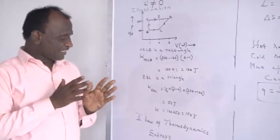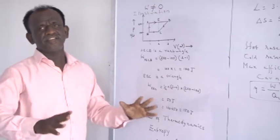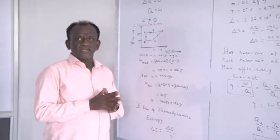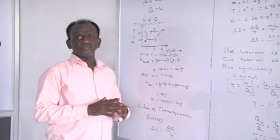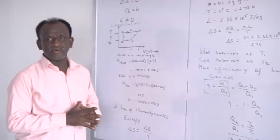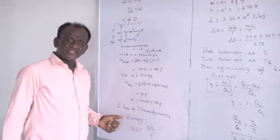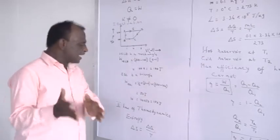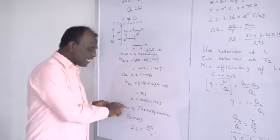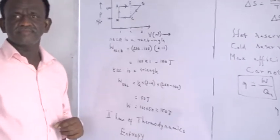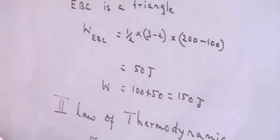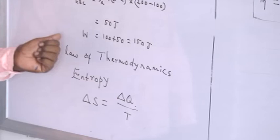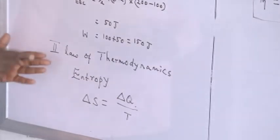The first law of thermodynamics is consistent with all natural phenomena. But naturally occurring phenomena are not always allowed by another law, called the second law of thermodynamics. The second law does not allow certain natural phenomena that are consistent with the first law. This second law introduces a quantity called entropy. Many phenomena consistent with the first law are not permitted by the second law of thermodynamics.